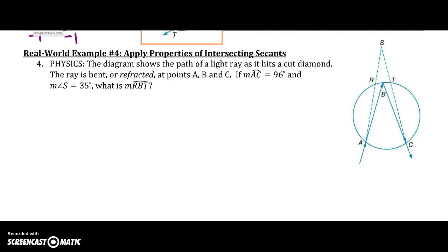The diagram shows the path of a light ray as it hits a cut diamond. The ray is bent or refracted at point A, B, and C. If AC is 96 degrees and angle S is 35 degrees, what is arc R, B, T?